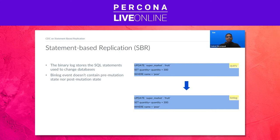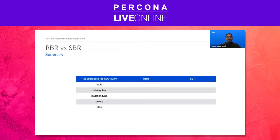On the other hand, in state-based replication, the binary log stores the SQL statements used to change the database. The binlog event looks much like the query executed by the application, unlike row-based events. The binlog event contains neither the pre- nor the post-mutation state of the row. Row-based replication and CDC are made for each other — their match is made in heaven. But there is a lot of work involved in making statement-based replication work for CDC.